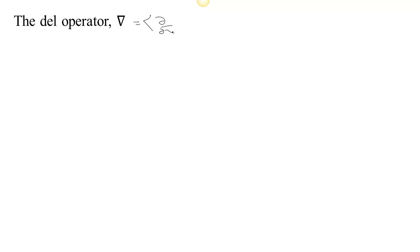There's a nice notation that helps us to remember and compute the gradient, the divergence, and the curl. It's the del operator, which is a vector of operations. The first component is the operation of taking the derivative with respect to x, the second with respect to y, and the third with respect to z. When we write the del operator, we have an upside-down delta made a little bold so that we know it's a vector-valued operator.